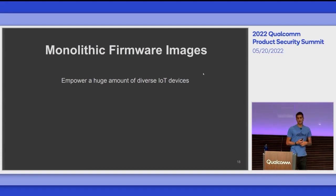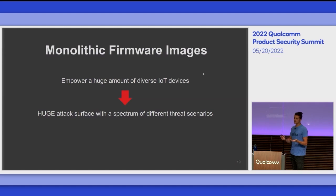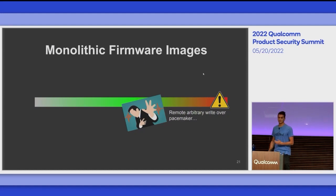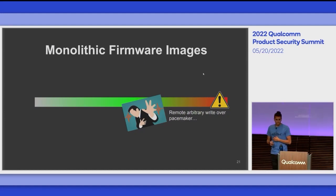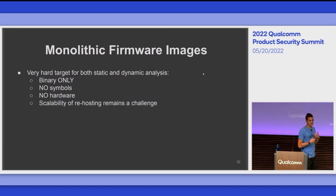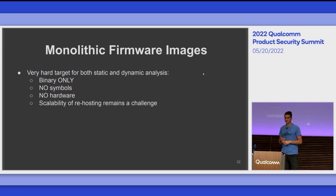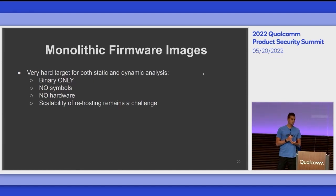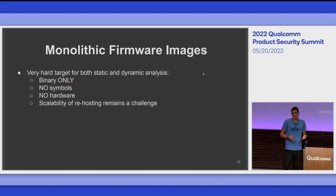Monolithic firmware images power a huge amount of diverse IoT devices, meaning the attack surface out there is very large. There is a spectrum of different threat scenarios ranging from 'I just hacked my toaster, which is not a big deal,' to 'I got a remote arbitrary write over a pacemaker,' which is actually a very big deal. This is notoriously a very hard target for both static and dynamic analysis, because you are on your own with a binary only and usually very little information about where it's coming from. You don't have symbols, and you don't have the hardware to run the firmware.